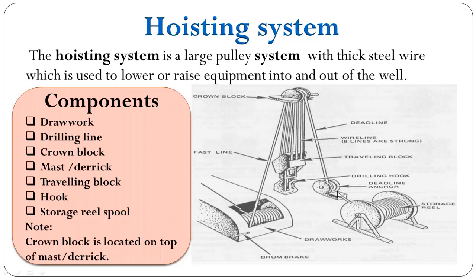The drilling line from the storage spool passes through the deadline anchor, then goes over the crown block sheave, and then the drilling line comes down and passes through the traveling block sheave and goes back up. In this way it will have a number of passes between the traveling block and crown block depending on the number of sheaves, and at the end the drilling line from the top of the mast comes down to the drawworks drum.